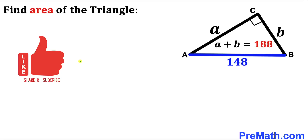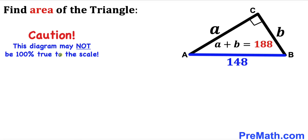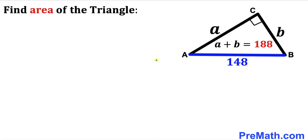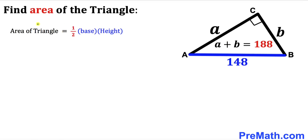Please don't forget to give a thumbs up and subscribe, and please keep in mind that this figure may not be 100% true to scale. Let's get started. Our very first step: we know that this blue side is the hypotenuse of triangle ABC. Since we are interested in calculating the area, let's recall the area formula: area equals one half times base times height.